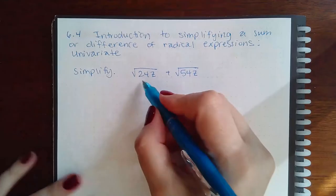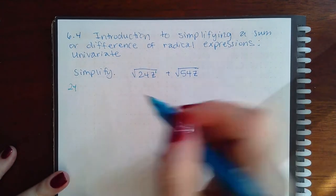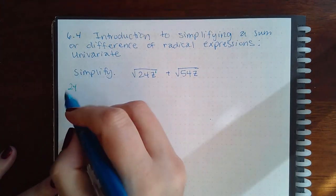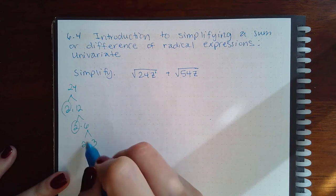We're going to break up the 24. This is z to the 1. So 24 is going to be 2 times 12, which is 2 times 6, which is 2 times 3.